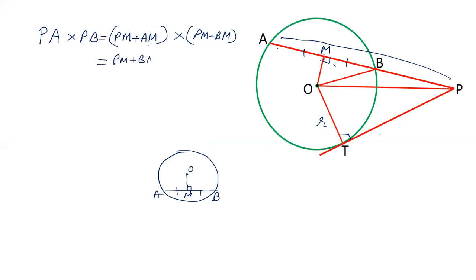PM plus BM into PM minus BM. Now A plus B into A minus B is A squared minus B squared. So it will be PM plus BM, PM minus BM will be PM squared minus BM squared. So we have reached to the point that PA into PB is PM squared minus BM squared.